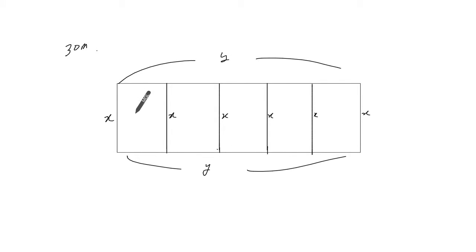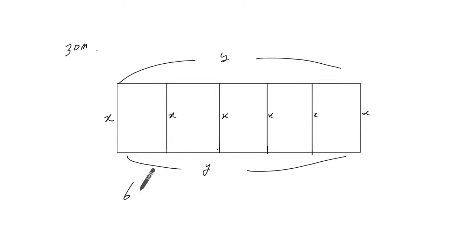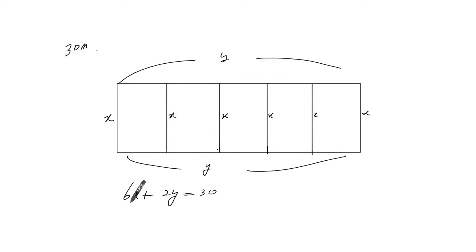Now all of that added up has to equal 30. So counting the segments: one, two, three, four, five, six. So 6X plus 2Y must equal 30. There's a common factor of two here, so you can see 3X plus Y is equal to 15.